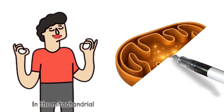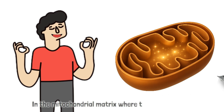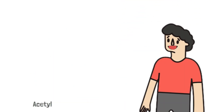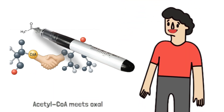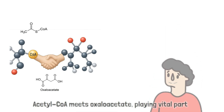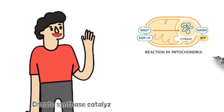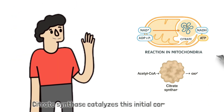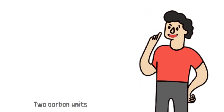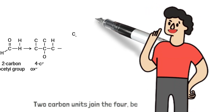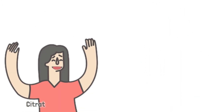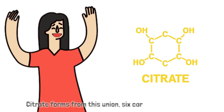In the mitochondrial matrix, where the magic starts: acetyl-CoA meets oxaloacetate, playing vital parts. Citrate synthase catalyzes this initial combination — two carbon units join the four, beginning oxidation. Citrate forms from this union, six carbons now in place.